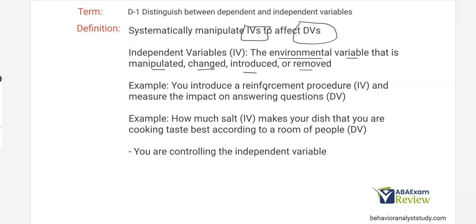For example, you introduce a reinforcement procedure — this is what you're changing or introducing or manipulating, making it your IV. And then you measure the impact on answering questions, your DV. So answering questions is impacted by the reinforcement procedure. It might go up, it might go down, it might not change. But answering questions is dependent on the reinforcement procedure.